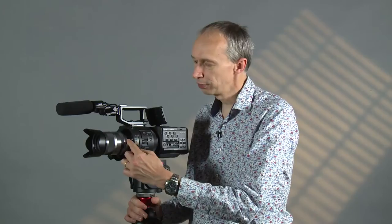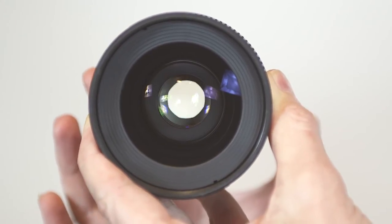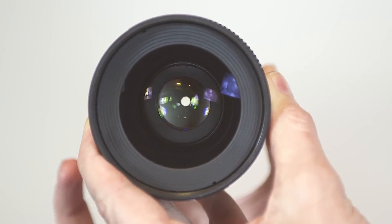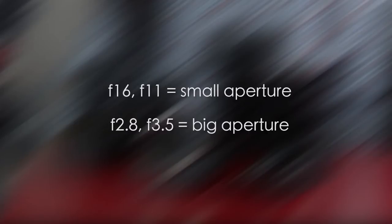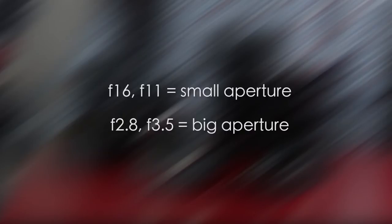The first is controlling how much light falls on the sensor, and that's controlled by the iris or aperture and the ND filters. The iris is like a window on the lens that opens and closes and lets different amounts of light in. A small aperture will have a big number like f11 or f16 and only lets through a very small amount of light. A big aperture, which is a small number like f2.8 or f3.5, lets through a lot more light.